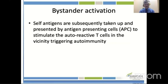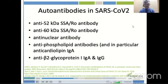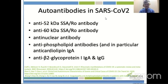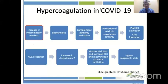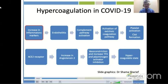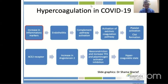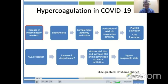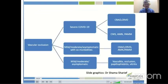Bystander activation occurs where self-antigens are attacked through antigen-presenting cells, triggering autoimmunity. Auto-antibodies found in SARS-CoV-2 include anti-52kDa SSA/Ro, anti-60kDa SSA/Ro, anti-nuclear antibody, antiphospholipid antibodies, anti-cardiolipin IgA, anti-B2 glycoprotein IgA and IgG. Hypercoagulation in COVID-19 results from inflammatory markers causing endothelitis, activating the complement pathway and extrinsic coagulation pathway, leading to platelet activation and clot formation.